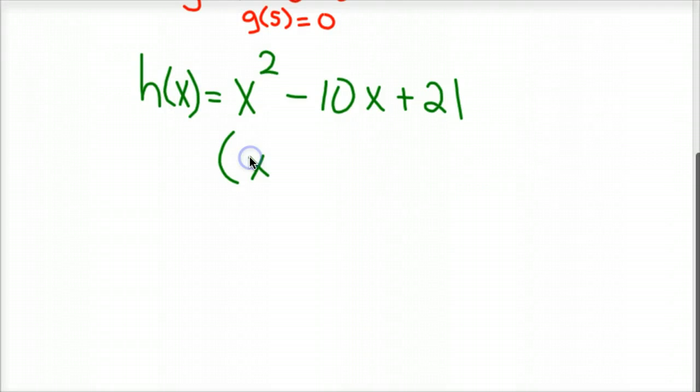This factors to x and x. 21 breaks into 7 and 3, or 21 and 1, but 7 and 3, and minus plus, I know, is a minus minus. If we redistributed that back through and went first, outer, inner, last, you'd end up with that original function. But by factoring it, this helps us find the roots or zeros very simply. So my roots would be 7 or 3.